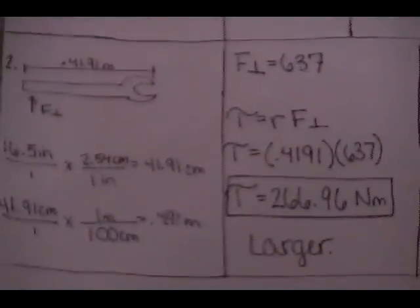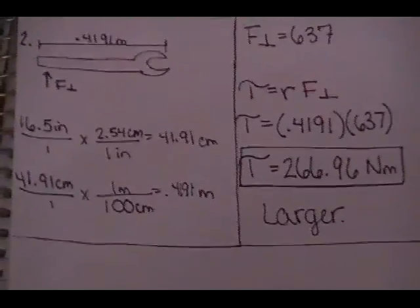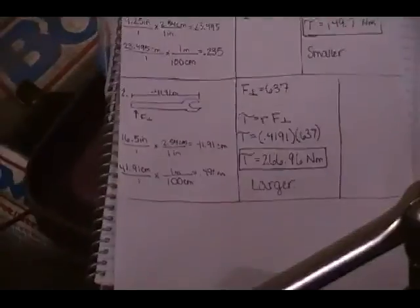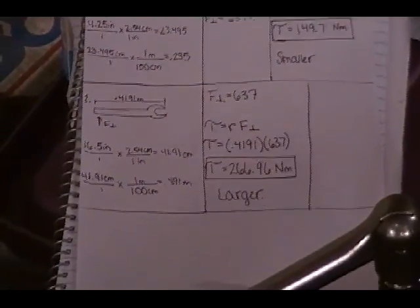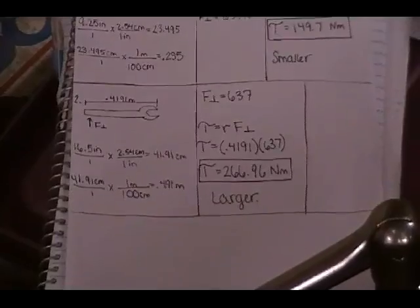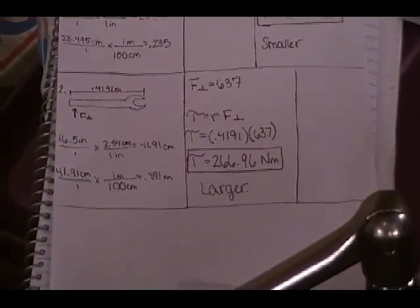We then have to convert the inches into meters and we're going to be using the same amount of force. We're going to be plugging it into the formula, torque equals radius times force perpendicular. It would be 0.4191 times 637 and we will have a torque of 266.96 newton meters.